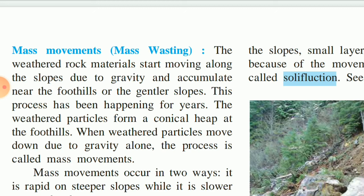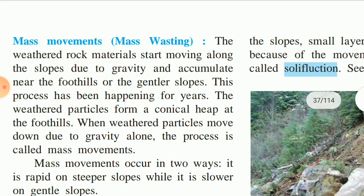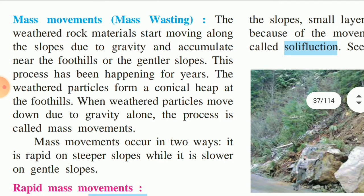Let us move on to the next topic of the chapter — mass movement. The weathered rock material starts moving along the slope due to gravity and accumulates near the foothills or the gentler slope. When this rock gets separated from the parent rock, because of gravity it starts moving down, rolling down to the valley. This process has been happening for years, and the weathered particles form a conical heap at the foothill.